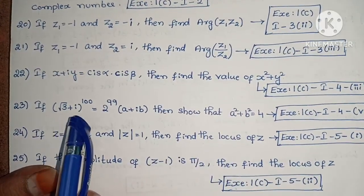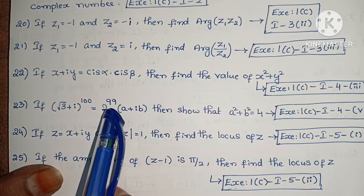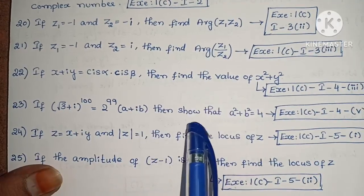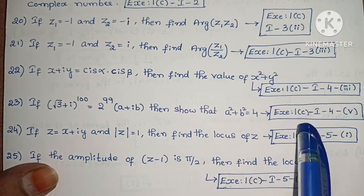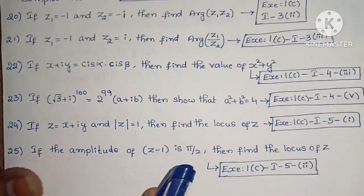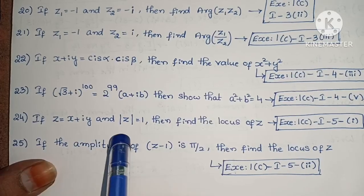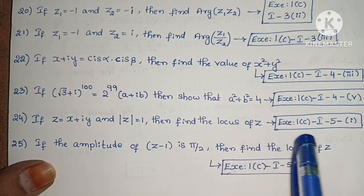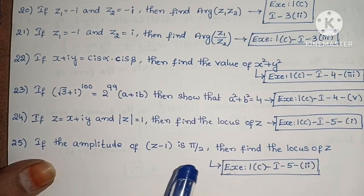Next, if (root 3 + i)^100 equals 2^99 · (a + ib), then show that a squared plus b squared equals 4. Exercise 1c, first roman, fourth, fifth one. Next, if z equals x plus iy and modulus of z equals 1, then find the locus of z. Exercise 1c, first roman, fifth, fourth one.